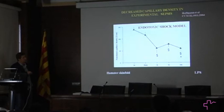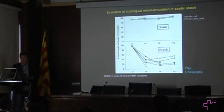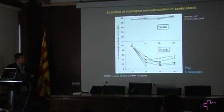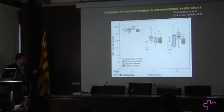This decrease in functional capillary density occurs not only with endotoxin, but also when inducing cholangitis in animals leading to severe sepsis. It occurs very rapidly in almost all organs — in the gut, sublingual area, and eyes of these animals — and very early on after the onset of sepsis.